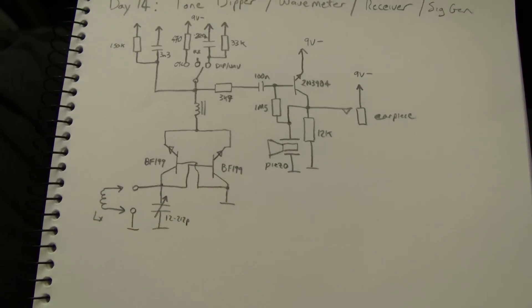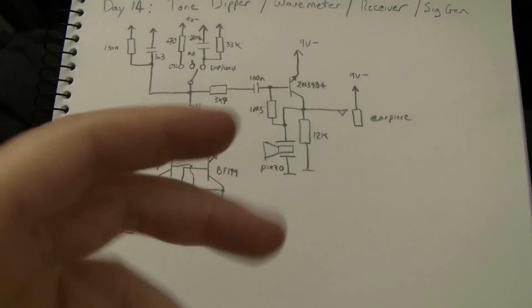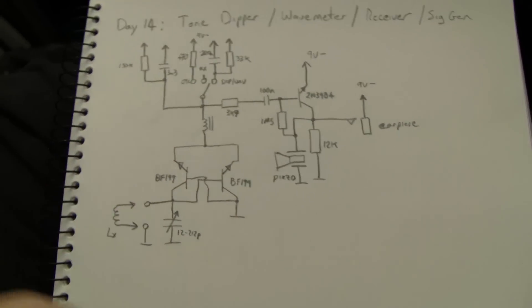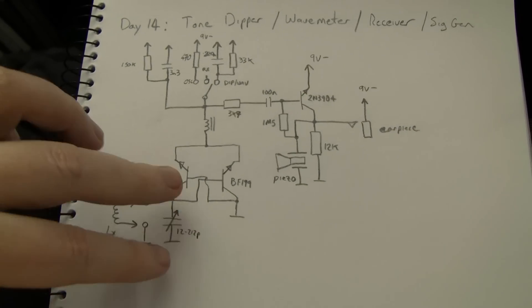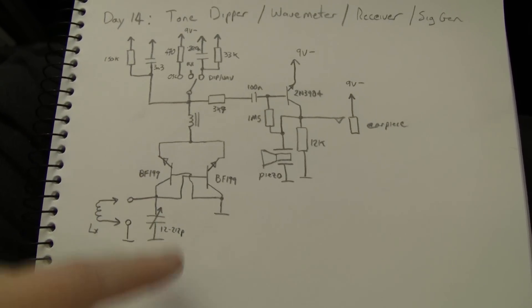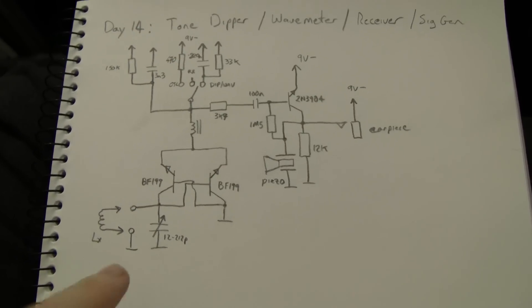If you happen to have PNP RF transistors, you could use them as well and flip everything around. Basically, just flip the supply around. Or if you wanted to build it the other way around, you could. There's no reason why you couldn't have the polyvaricode's stator to ground instead of to the positive supply as opposed to the negative supply.